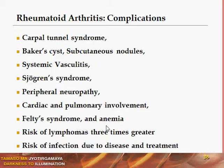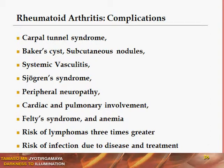Anemia is an indicator of disease severity. The risk of lymphomas is three times greater in patients with rheumatoid arthritis. There is also increased risk of infection due to the autoimmune nature of the disease itself, as well as from disease-modifying and immunosuppressive treatments, which can themselves predispose patients to infections.